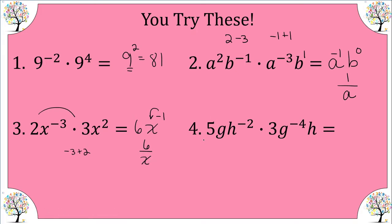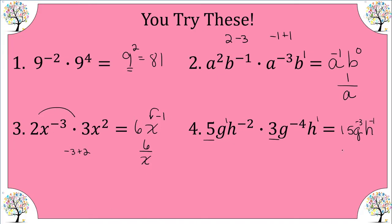Number four: five times three gives us 15. Our base is g and h — I have an understood one on each. For g: one plus negative four is negative three. For h: negative two plus one is negative one. The 15 has an understood positive exponent, but g and h will reciprocate to the denominator, giving us 15 over g cubed h.